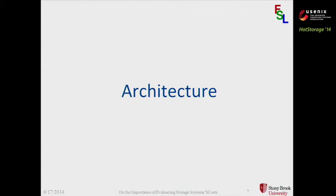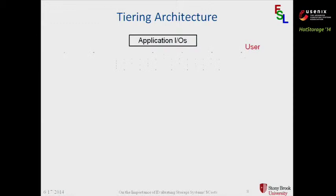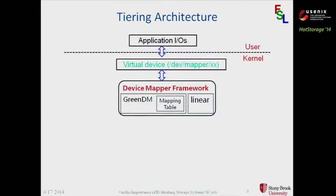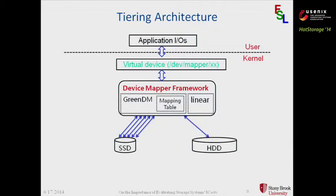We talked about the cost model; let's now briefly talk about the architecture of our case studies. For the tiering architecture, application IOs go from the user level to the kernel level, where they are captured by the device mapper framework. There are many existing targets there; Linear is one of them, which maps from a virtual layer to the physical layer without any data management. GreenDM is the one we came up with. According to the mapping table of GreenDM, IOs are redirected to the SSD or HDD based on the hotness and coldness of the data — we promote hot IO from the HDD to the SSD and cold IO from the SSD to the HDD.